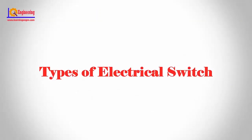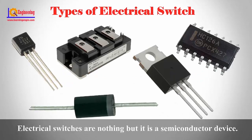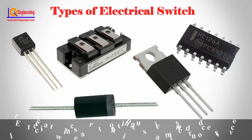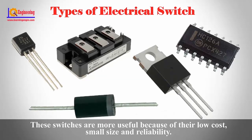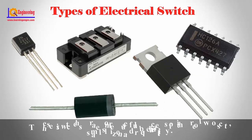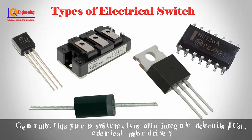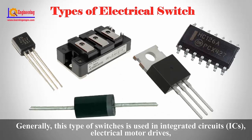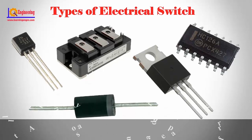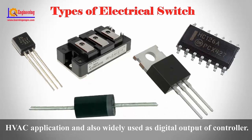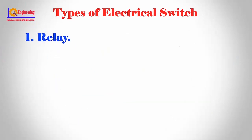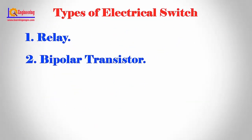Types of electrical switches. Electrical switches are semiconductor devices, useful because of their low cost, small size, and reliability. These switches are used in integrated circuits, electrical motors, HVAC applications, and also widely used as digital outputs of controllers. The types are: one relay, two bipolar transistor, three power diode, four MOSFET, five IGBT, six SCR, seven TRIAC.